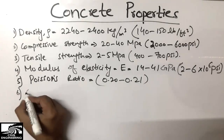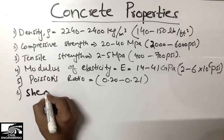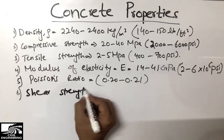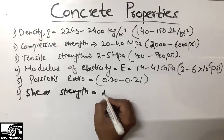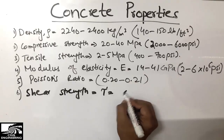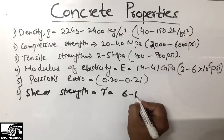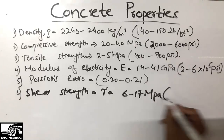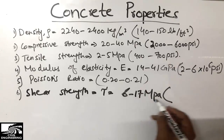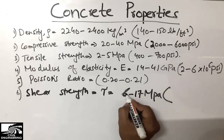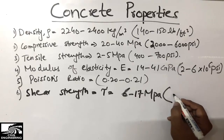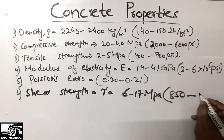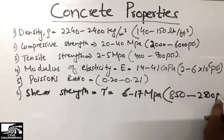The sixth property is the shear strength of concrete, represented by tau. Shear strength generally ranges from 6 to 17 megapascal, or we can say from 850 psi to almost 2500 psi.